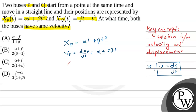Similarly, for bus Q, xQ is given as ft - t². So, velocity of Q will be dxQ/dt, which equals f - 2t.